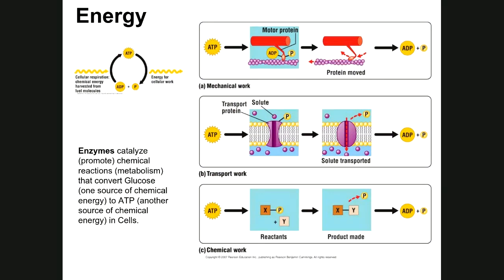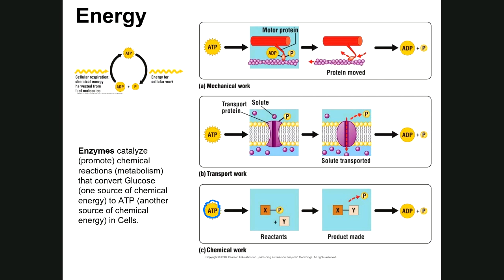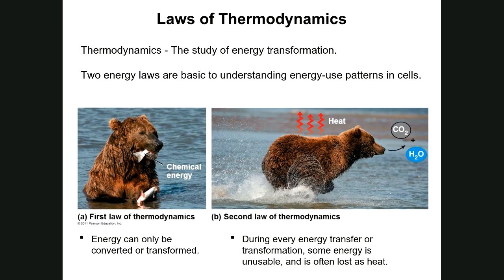Metabolism involves chemical reactions where reactants are converted to products. We'll focus on two areas: energy, and the types of chemical reactions responsible for producing and using it, and then the proteins called enzymes that need that energy. There are two energy laws we cover. These laws are called the laws of thermodynamics — the first law and the second law.